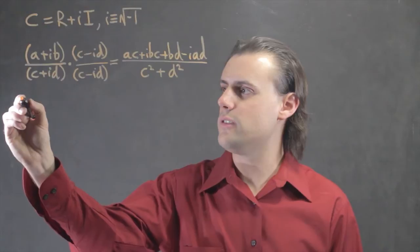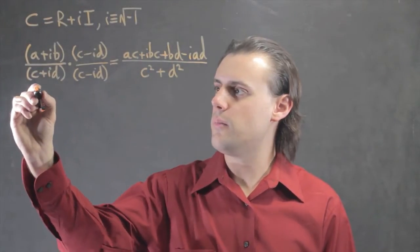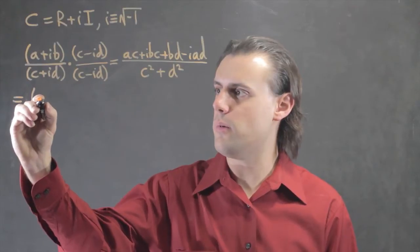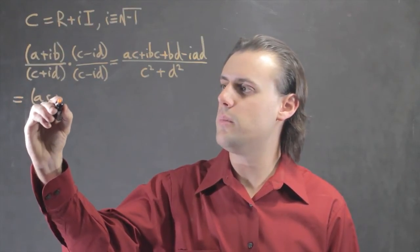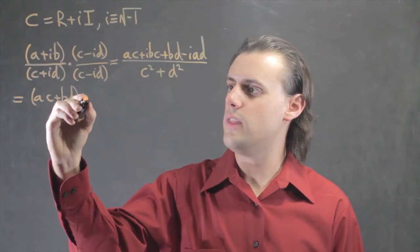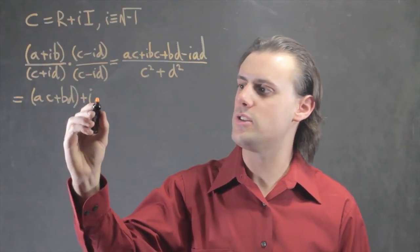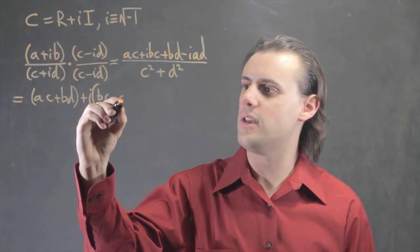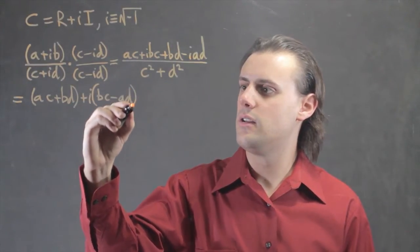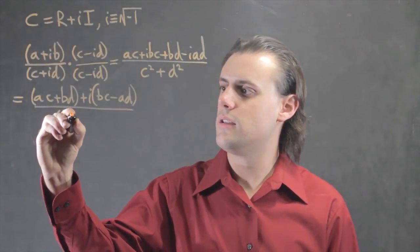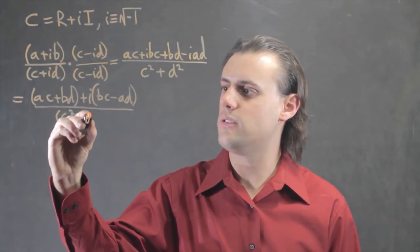I can simplify this by writing the numerator in terms of just the real parts, ac plus bd, and then the imaginary component, which is i times bc minus ad, with that whole thing divided by c squared plus d squared.